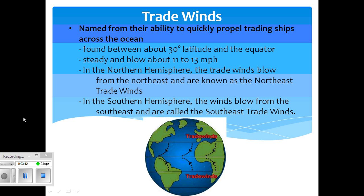They blow at a steady speed of 11 to 13 miles per hour. In the northern hemisphere, the trade winds blow from the northeast and are known as the northeast trade winds. In the southern hemisphere, the winds blow from the southeast and are called the southeast trade winds.